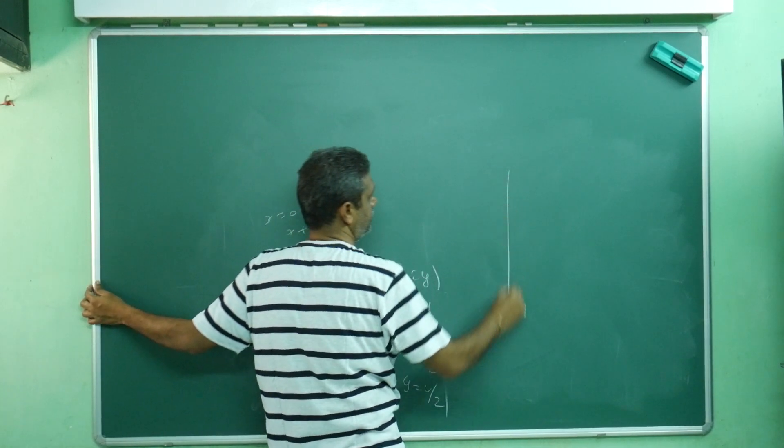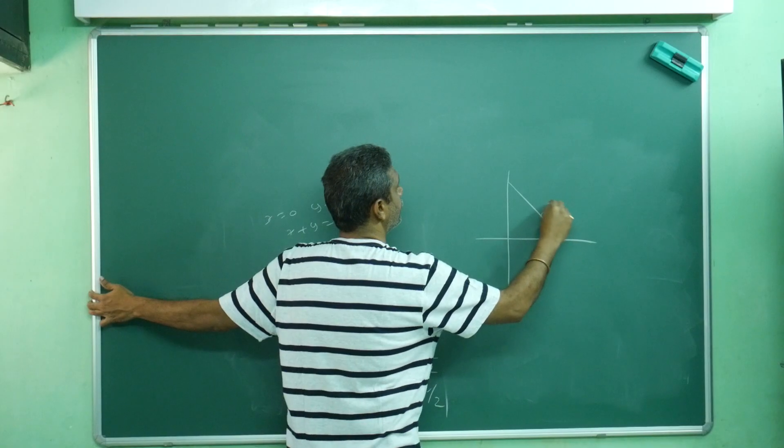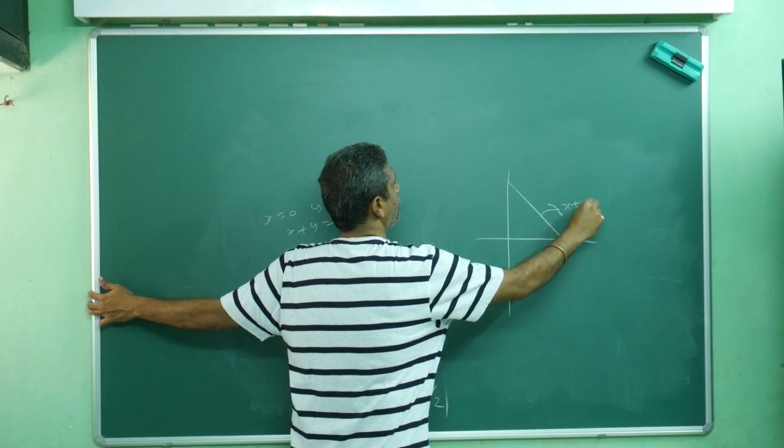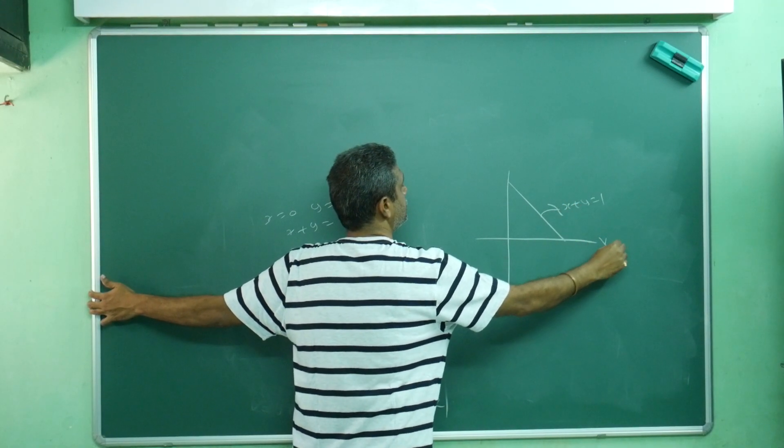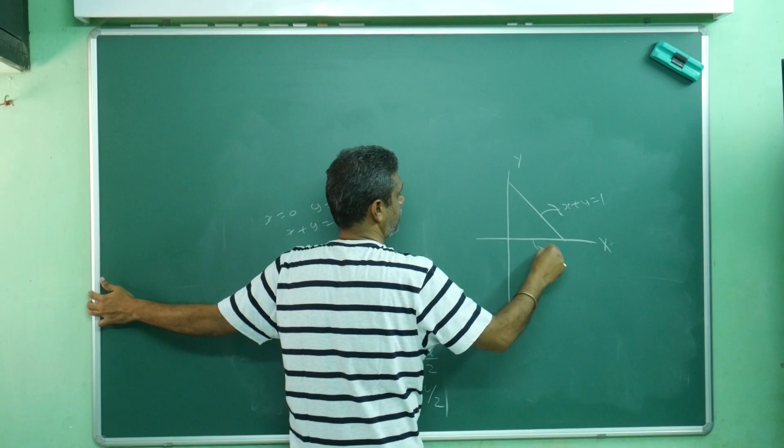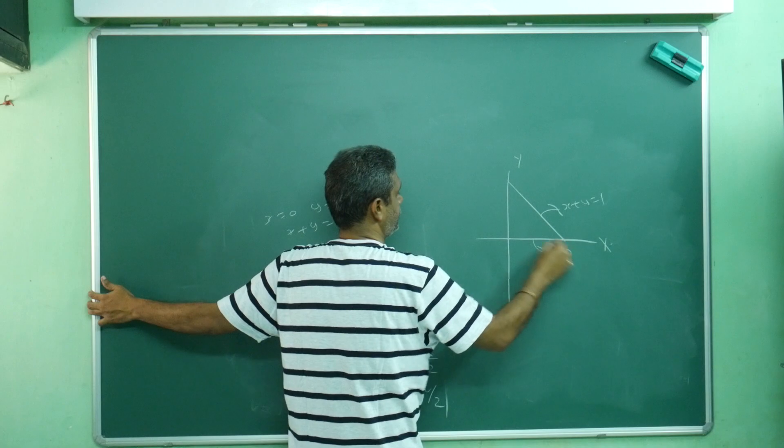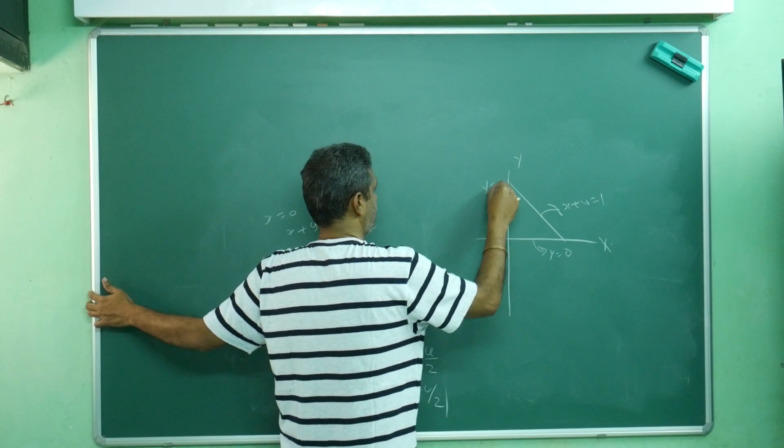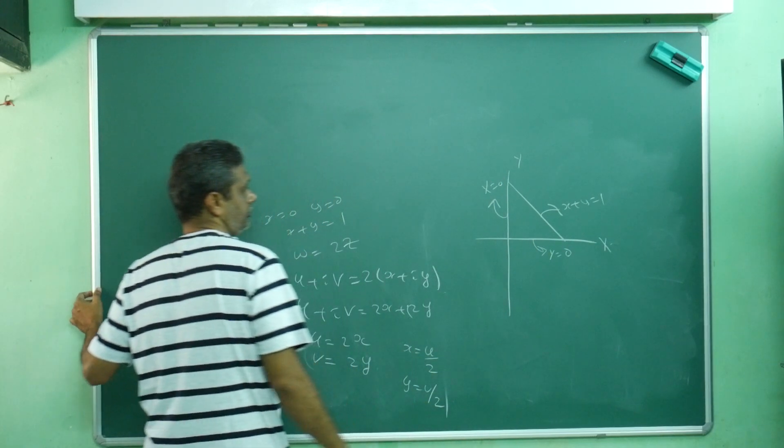In z plane, this is x axis, this is y axis. This you can write y = 0, this fellow is x = 0.